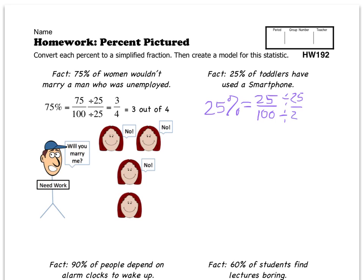So I'm going to divide the top by 25 and the bottom by 25, which is just a special form of 1, so we don't change the value but we end up with nicer numbers. 25 divided by 25 is 1, and 100 divided by 25 is 4, so we get 1 out of 4. We put a little equal sign there, and we've written it out as an English sentence: 1 out of 4.